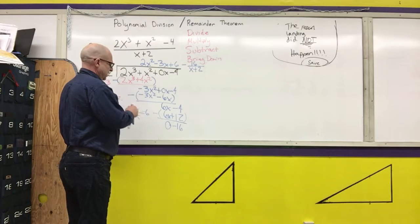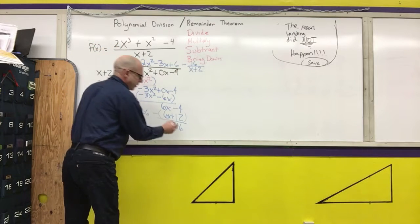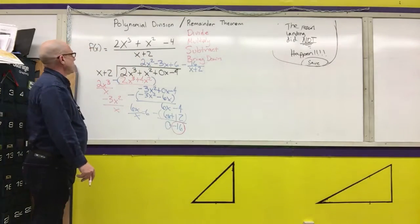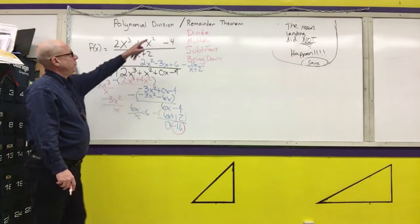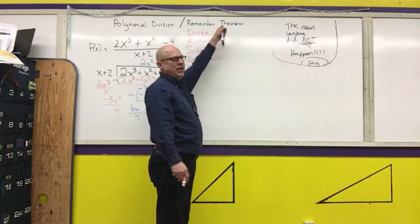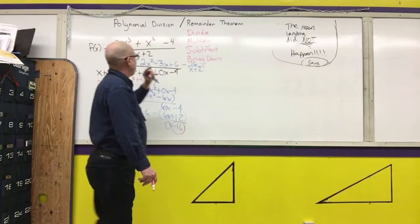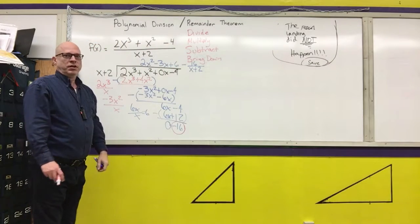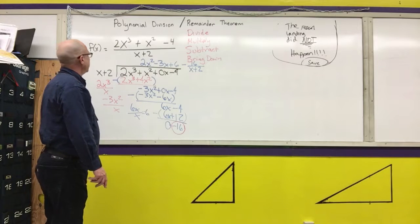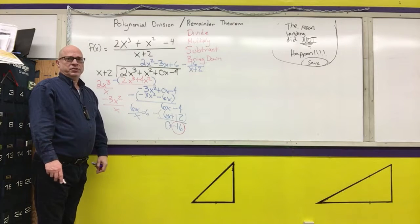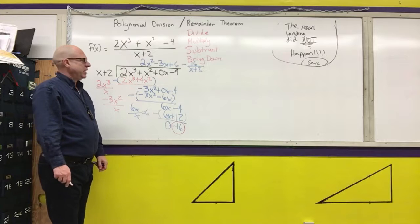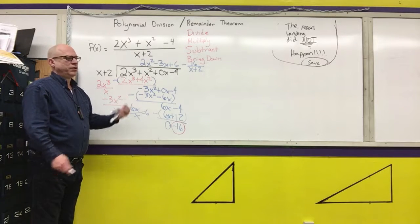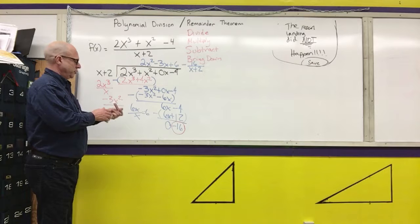This negative 16 is called the remainder. The second part we're going to discuss is the remainder theorem. But before we discuss that, we're going to redo this problem using what is called synthetic division. We do synthetic division the same way we do synthetic substitution, but we've got to figure out which number we're going to be using for the synthetic substitution.